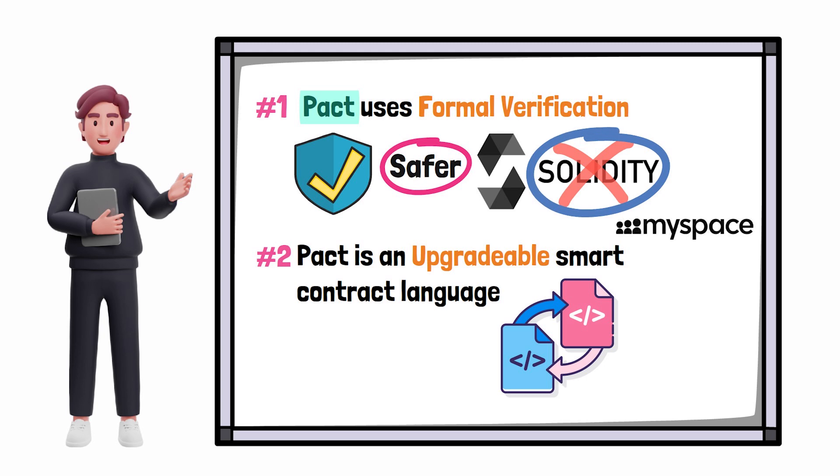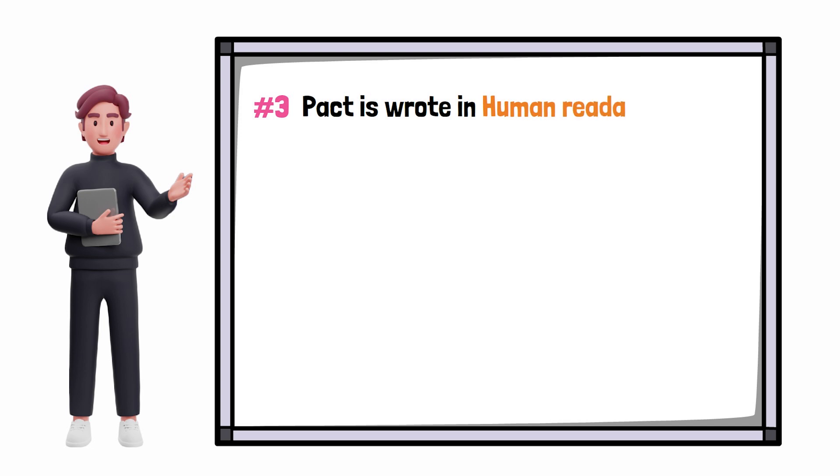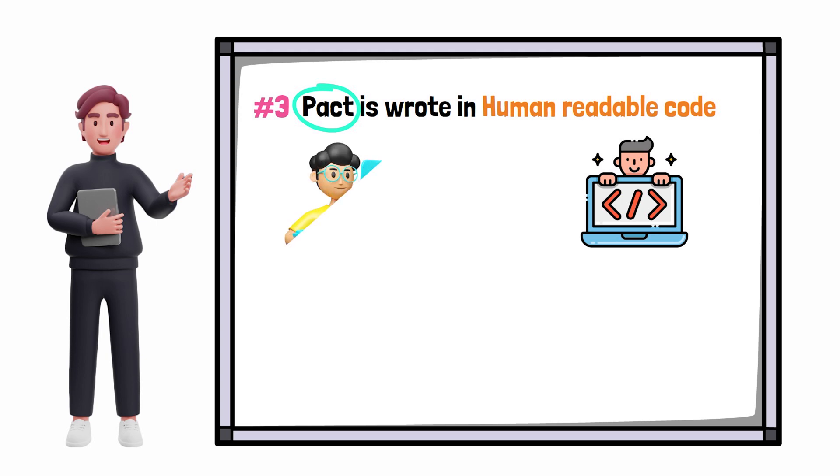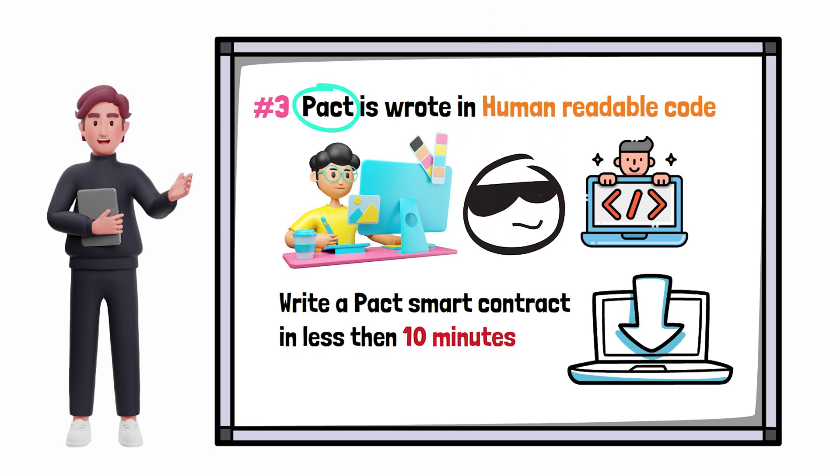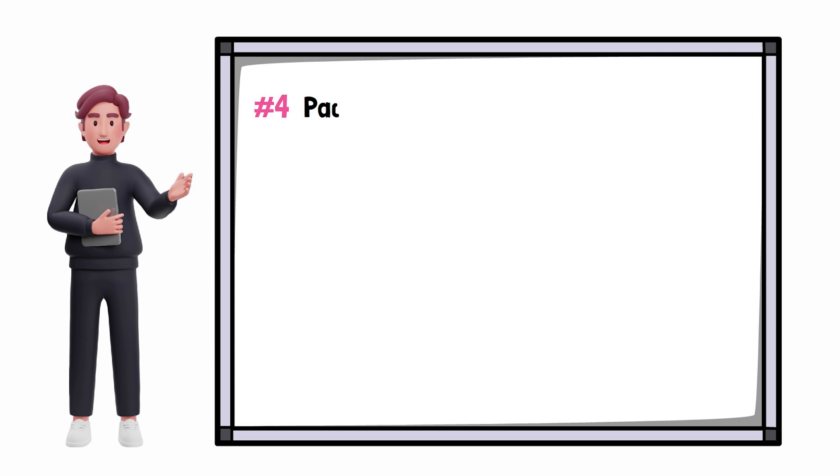Number three: Pact is written in human readable code. Not only does this keep developers honest, but it also makes coding in Pact so easy that you can teach an eight-year-old how to write a Pact smart contract in less than 10 minutes. This is a fact. My son did it. The link to that video is down in the description.